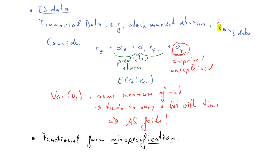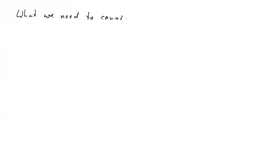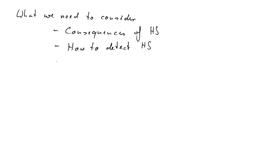Another reason to observe heteroscedasticity is functional form misspecification. Often the fact that we see heteroscedasticity may be indicative of having a misspecified model. So we need to consider the consequences, how to detect it, and what to do if heteroscedasticity is present.